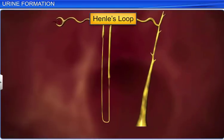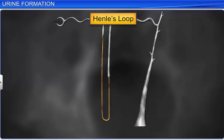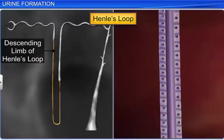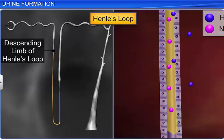The proximal convoluted tubule is followed by Henle's loop, where minimal reabsorption takes place. However, the region plays a vital role in maintaining the high osmolarity of medullary interstitial fluid. The descending limb of Henle's loop is permeable to water and almost impermeable to electrolytes, which helps concentrate the filtrate as it moves down.